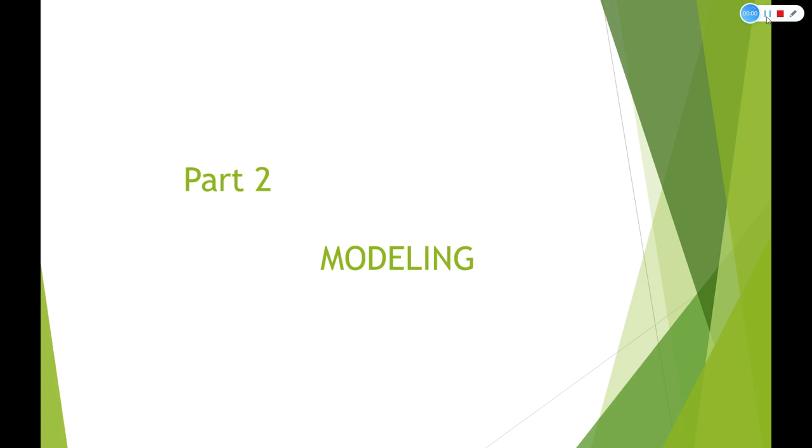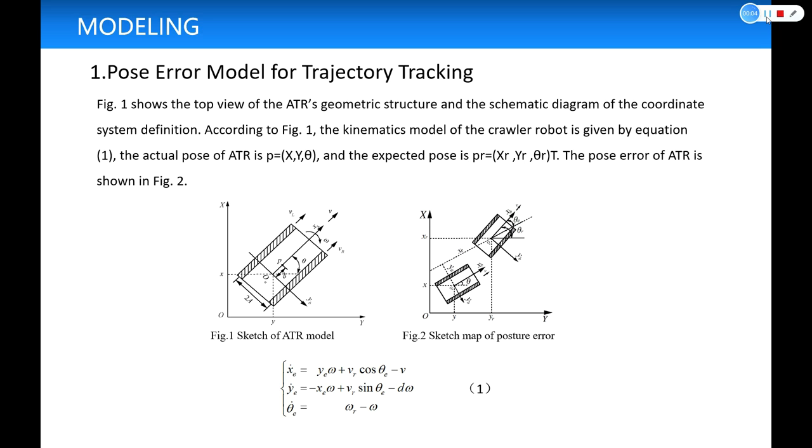Secondly, I will describe the modeling. Pose error model for trajectory tracking. Figure 1 shows the top view of the ATR's geometric structure and the schematic diagram of the coordinate system definition. According to Figure 1, the kinematics model of the four-wheel robot is given by equation 1.